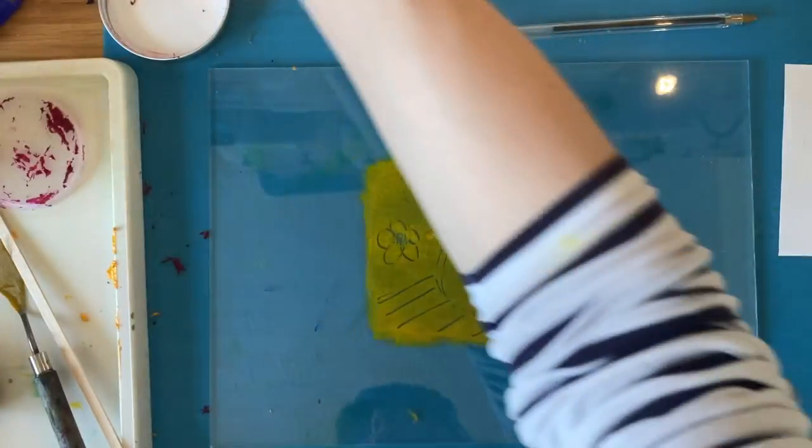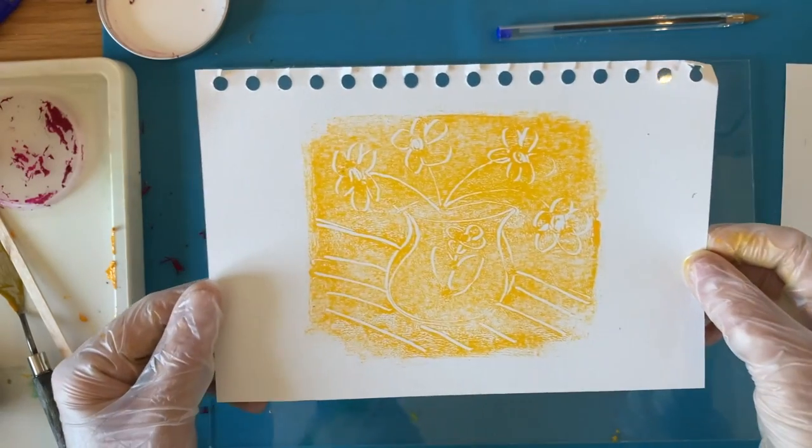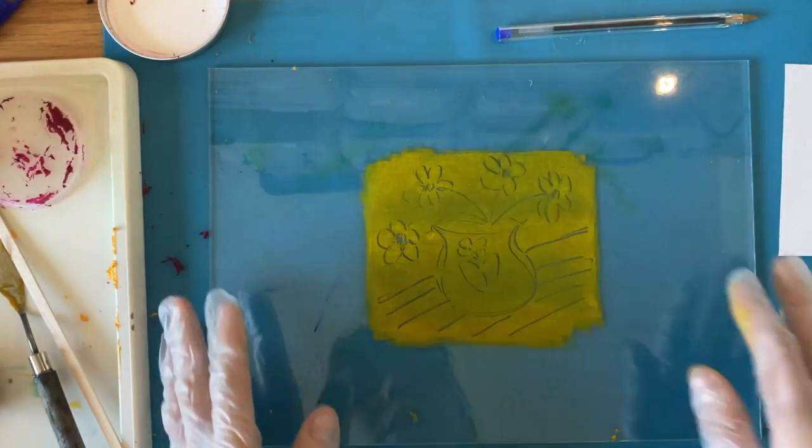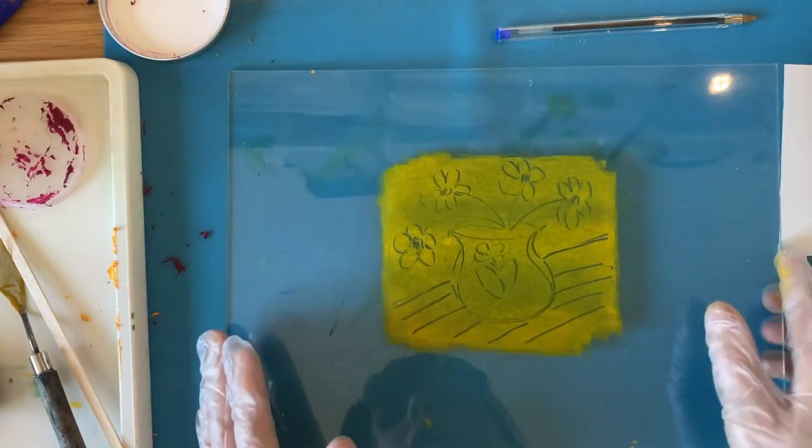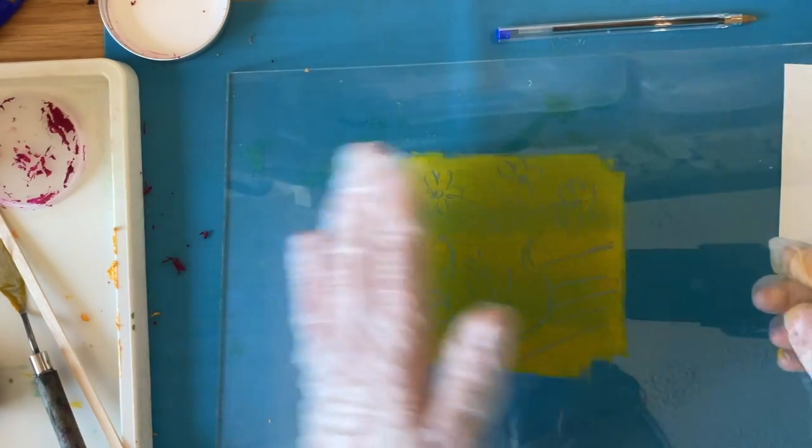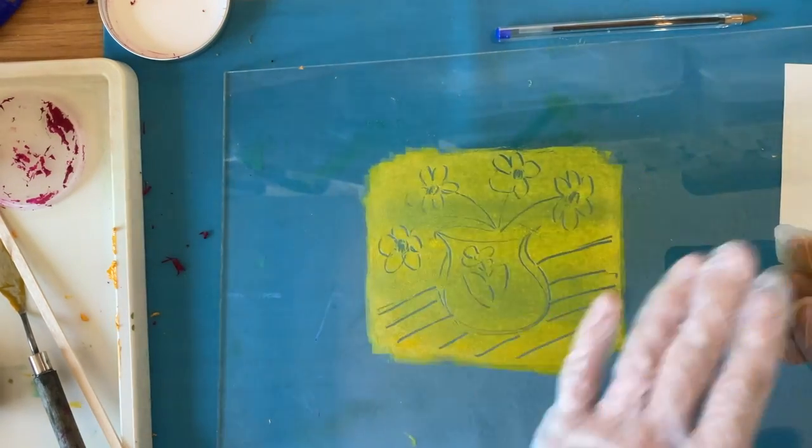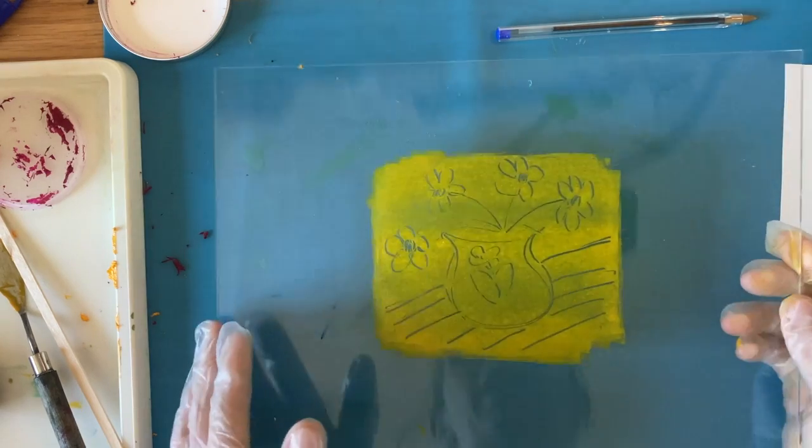Some techniques for you to try. It can all be washed off with water. You can just run it under. You don't need any soap, you can just run it under water and that paint will come off. If you want to just have a little go and then wash it off and start again at another time.